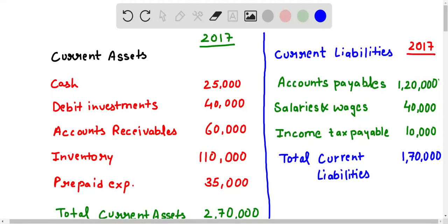Hello everyone, so in the given question we need to find out current ratio for the year 2017.